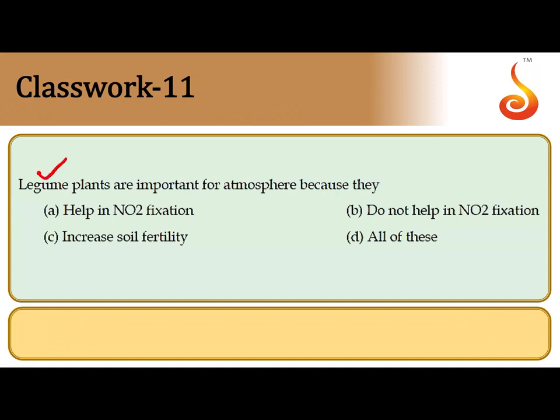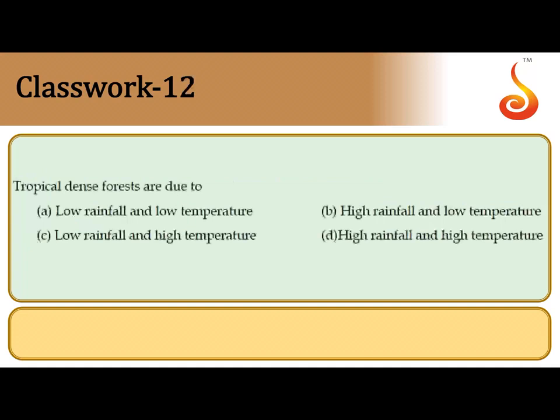The 11th question asks why leguminous plants are important for the atmosphere. Leguminous plants help in nitrogen fixation, and because of this they enhance the fertility of the soil. So the correct answer is option C: they increase the fertility of the soil.